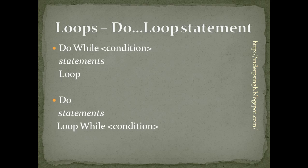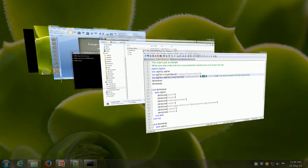There is a second variation of the DO loop statement. Here, the first statement is DO, followed by a number of statements, and then we have the LOOP WHILE condition. What this DO loop statement does is it starts at the beginning, does not test any condition, and just executes all the statements. After executing all the statements, it tests whether the condition is true. If the condition is true, it goes back and repeats all the statements again. If the condition is false, it comes out of the loop. Let us see how this works.